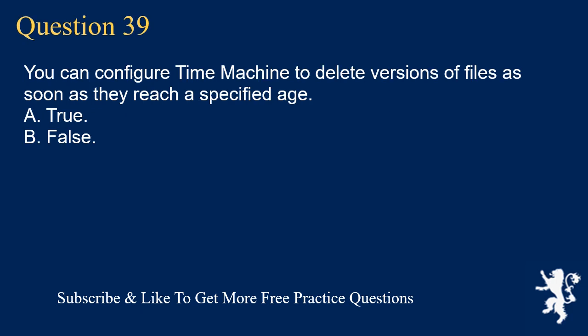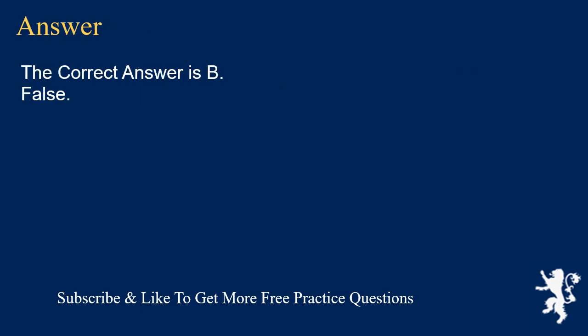Question 39. You can configure Time Machine to delete versions of files as soon as they reach a specified age. A. True. B. False. The correct answer is B: False.